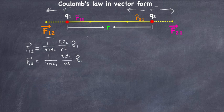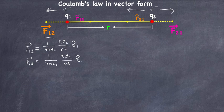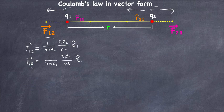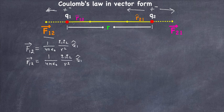Some students really get confused with the notations of 12 or 21. Just look at the direction — the force goes from q2 towards q1, so we represent it as r̂21. The force is on charge q1, that's why we wrote the force on charge 1 due to charge 2 as F12.